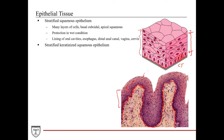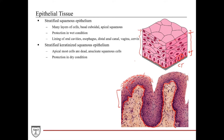Then we have the counterpart: the stratified keratinized squamous epithelium. The tissue architecture is very similar to the non-keratinized type, but the apical-most surface cells are actually dead — so we don't expect to see any nuclei in those cells. Their function is to provide protection in dry conditions. The cells up here are all dried and dead, but because they form a nice protective layer and still hold on to the live cells, they're able to provide a lot more protection not only from force and friction, but also from bacterial invasion, as well as the tissue itself drying out.